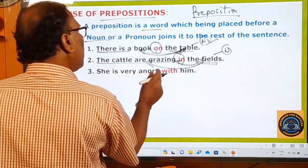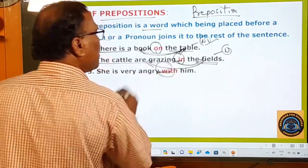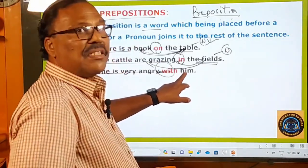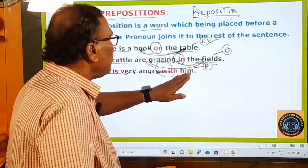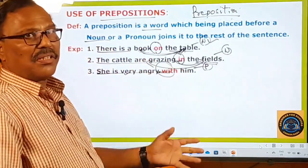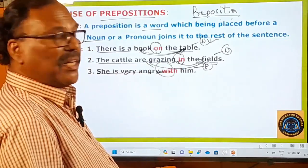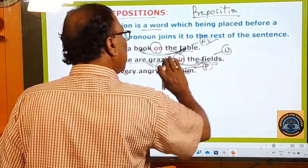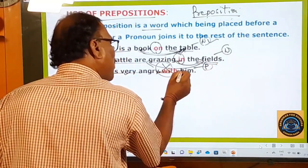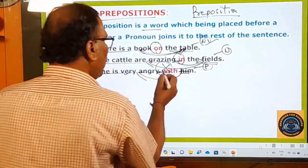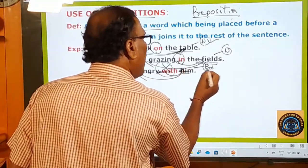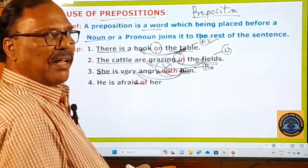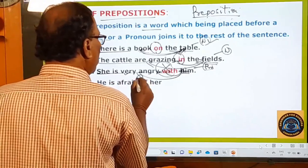Now let's move on to the kinds of prepositions in the English language. There are three kinds: simple prepositions, compound prepositions, and phrase prepositions. They are very important for all your competitive examinations. I am going to upload as many as five to seven videos on this topic. Please try to watch all of them and subscribe to my channel to get notifications.